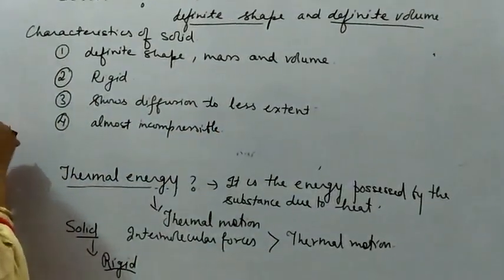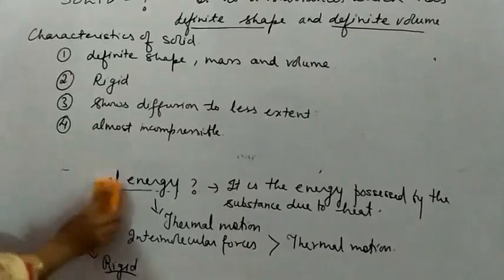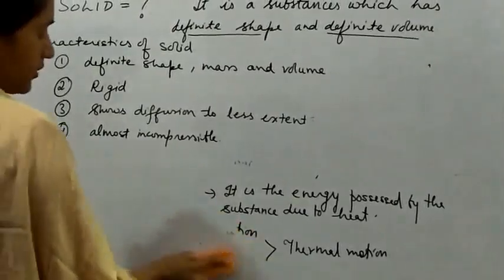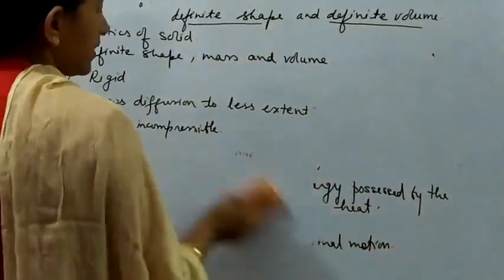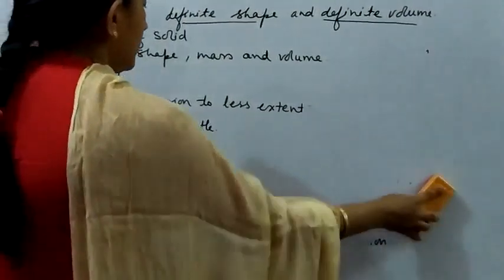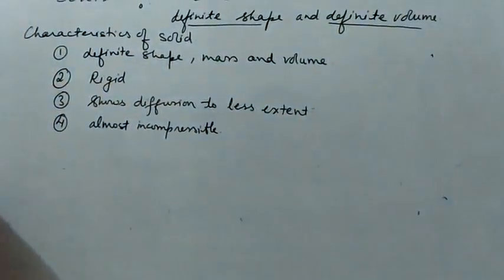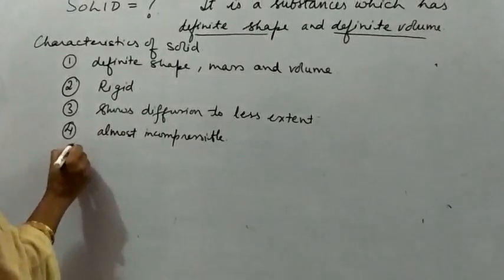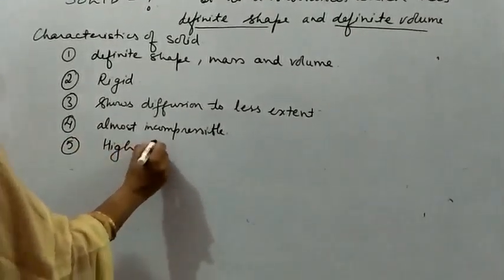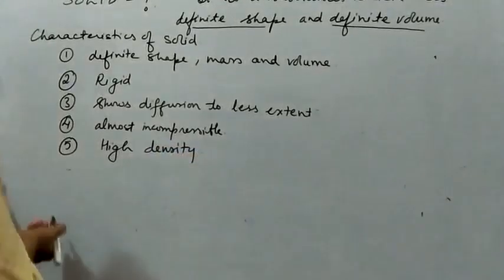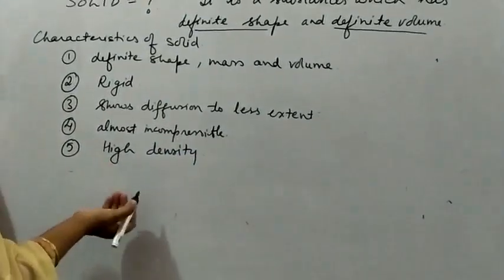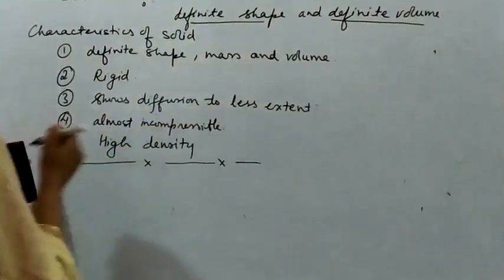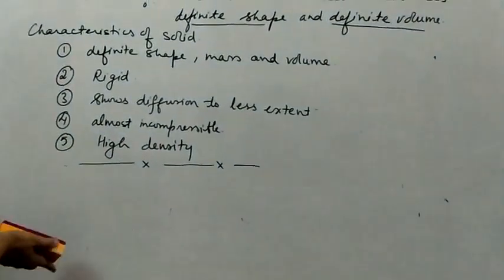And where we have got the examples of the solid which are compressible, definitely there will be air gaps between the particles or between the molecules which get compressed when the force has been applied. So, they have got definite shape, mass and volume, rigid, shows diffusion to less extent and almost incompressible and have high density. If we compare it with the liquid or gases, they will have high density.